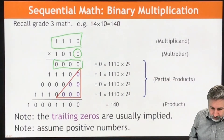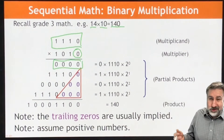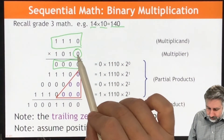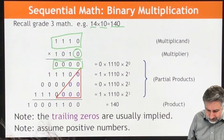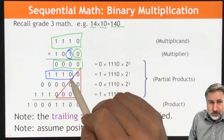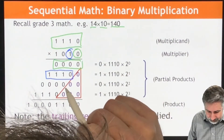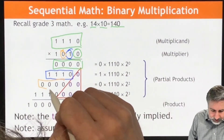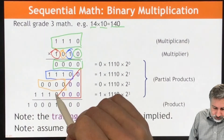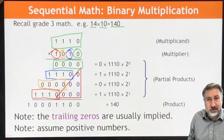Let's look at an example: 14 times 10 should give us 140. For each bit of the multiplier, we decide whether to add the multiplicand to our ongoing partial products. The first bit is 0, so 0 times anything is 0. The second bit is 1, so we put down a copy of the multiplicand, shifted to line up with that bit position. The third bit is 0, so we put 0 down again. The last bit is 1, so we put another copy of the multiplicand. Then we add all of these together.